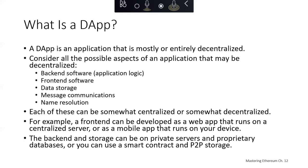Each of those categories could be centralized or decentralized, and it's really not a yes or no — it's not a Boolean, it's more of a range. Some apps are more centralized than others and some are more decentralized. For example, a front end can be a web app that runs on a centralized server, or it can be a mobile app that runs on a device. The backend and storage can be on private servers and databases, or they could use a smart contract and peer-to-peer decentralized storage.